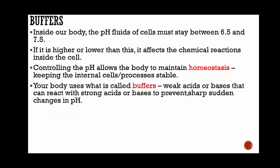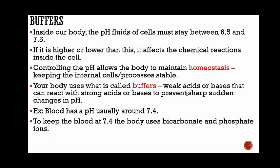Your body uses what is called buffers, which are weak acids or bases that can react with strong acids or bases to prevent sharp sudden changes in pH. It's like controlling the pH level of a pool. If it's higher than 7.4, they're going to use an acid to bring that number down. If it's lower than 7.4, we're going to use a weak base to bring that number back up.